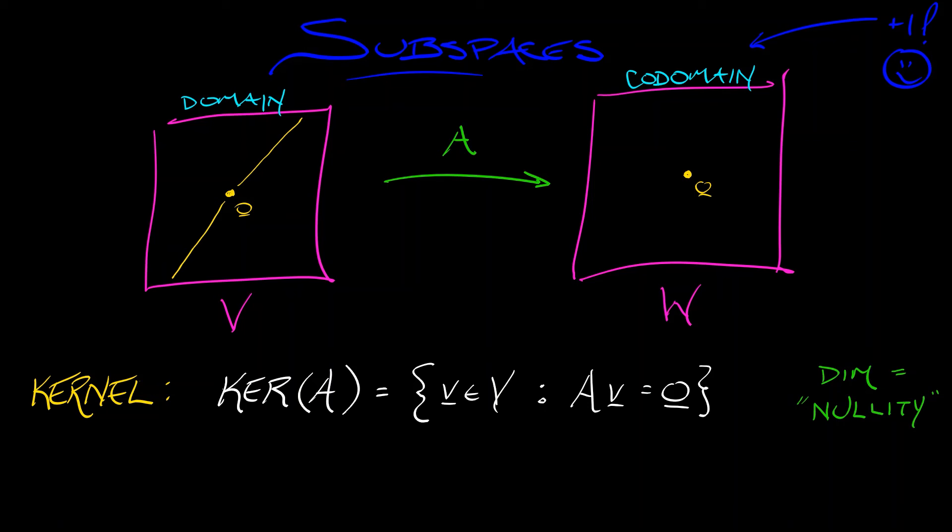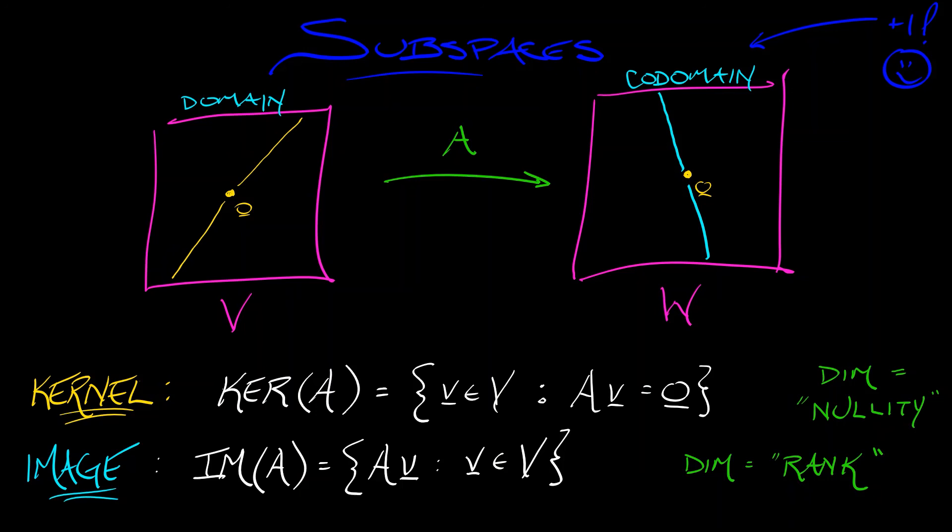Okay. Other subspaces. There is something that is somewhat dual to the kernel that is also very cool. This is called the image of A. The image of A is the set of all vectors in the codomain of the form A times V. You just take all possible inputs, send them to the codomain via the linear transformation. You look at them, they form a subspace of the codomain. That's the image of A. The dimension of this subspace, the dimension of the image of A, is called the rank of A. Both the rank and the nullity are important numbers associated to this linear transformation.